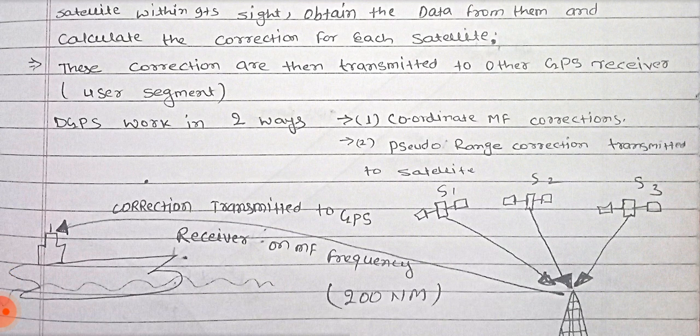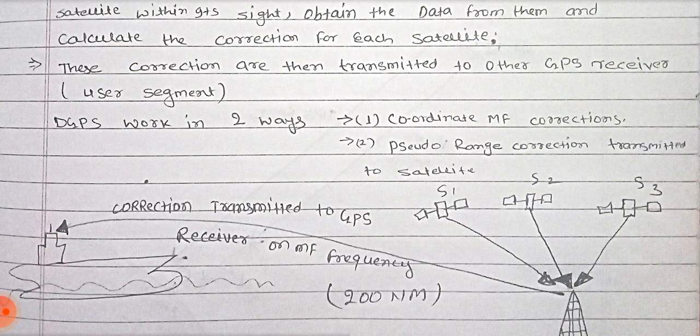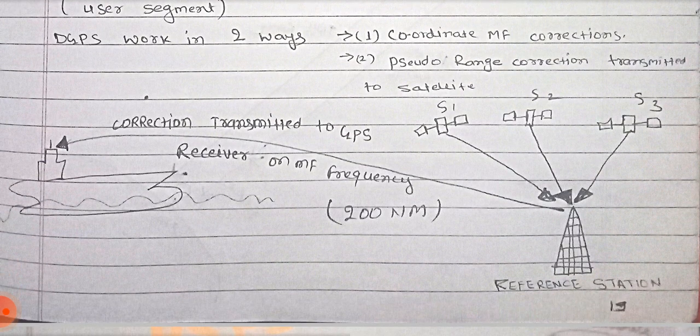DGPS works in two ways. First is coordinate MF correction, second is pseudo range correction transmitted to satellite. These two methods are basically arranged when any vessel is within 200 nautical miles of range, that is MF frequency range. At that time, the DGPS reference station sends the MF correction to the nearby vessel.